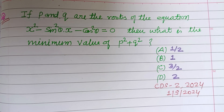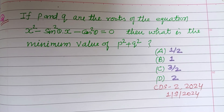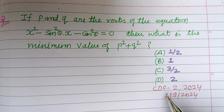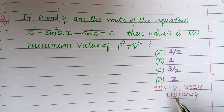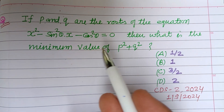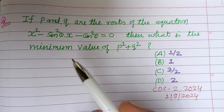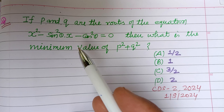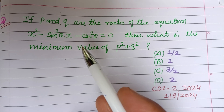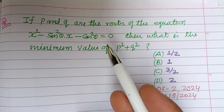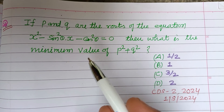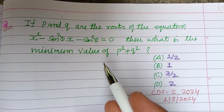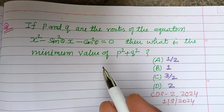Hello viewers, warm welcome to this YouTube channel. Question from CDS Second 2024: if p and q are the roots of the equation x² minus sin²θ times x minus cos²θ equals zero, then what is the minimum value of p² plus q²?